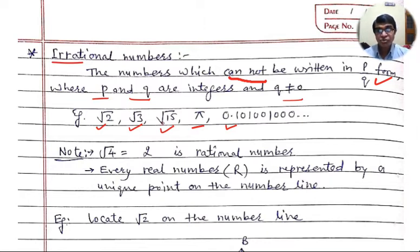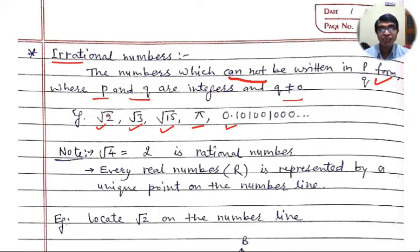Here, root 2, root 3, root 15 — the numbers 2, 3, and 15 are all not perfect squares. So under the radical sign, the square root of non-perfect square numbers are irrational numbers.